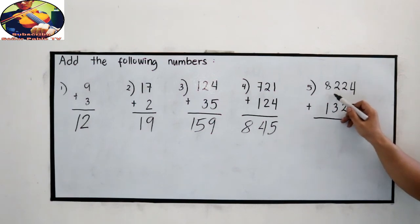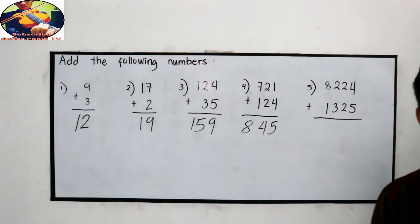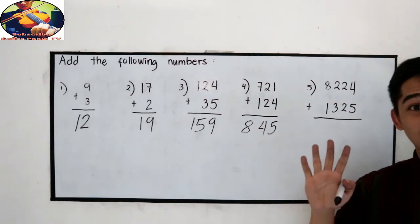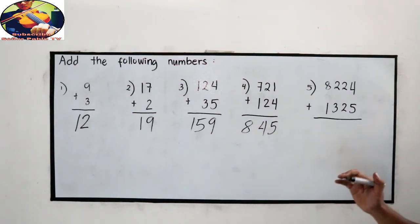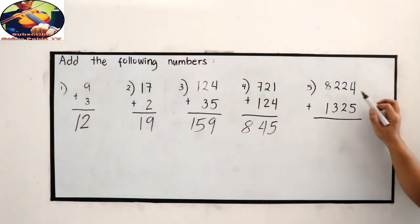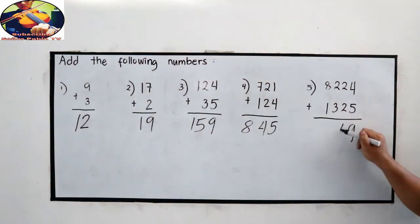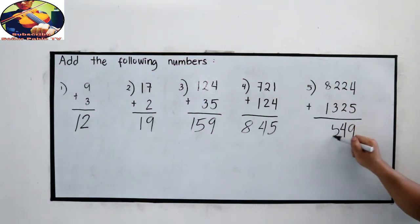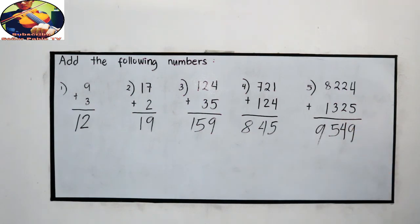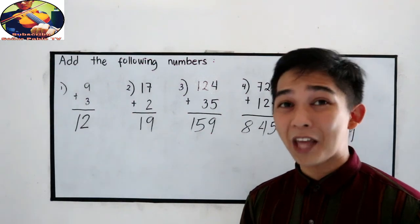And now: 8,224 plus 1,325 — a 4-digit number. Check the alignment and add: 4 plus 5 is 9. Then 2 plus 2 is 4. Then 2 plus 3 is 5. Then 8 plus 1 is 9. The answer is 9,549. That is how to add numbers without regrouping.